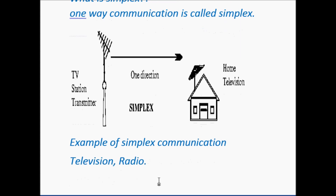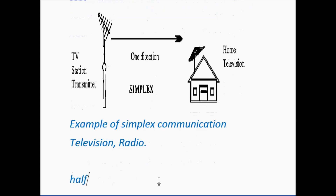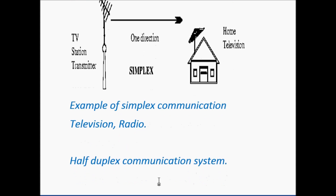Now let's discuss half duplex communication. In a half duplex communication system, there is both transmitting and receiving — both occur. The receiver can also transmit packets to the transmitter, but not at the same time.